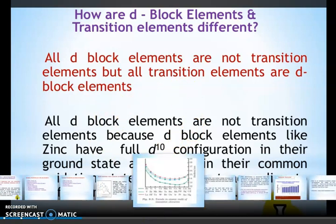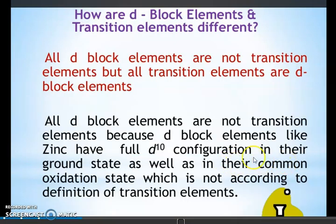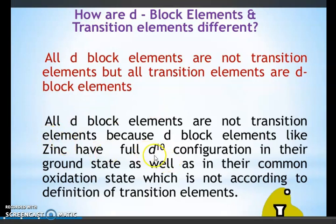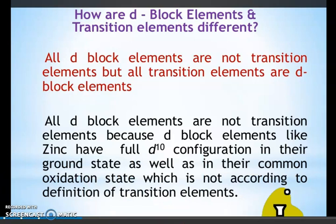Zn, Cd, and Hg are not considered transition elements. Look — Zn has 3D¹⁰, Cd has 4D¹⁰, and Hg has 5D¹⁰ — the d-orbital is completely filled. Because of the fully filled d-orbital, these are not considered transition elements. A board exam question comes from this: 'Why are Zn, Cd, Hg not considered transition elements?' Answer: because they have a fully filled D¹⁰ configuration in their ground state as well as in their common oxidation state, whereas a transition element must have an incompletely filled d-orbital.